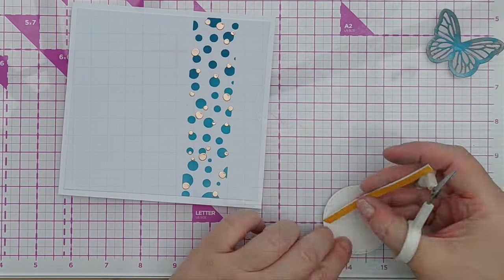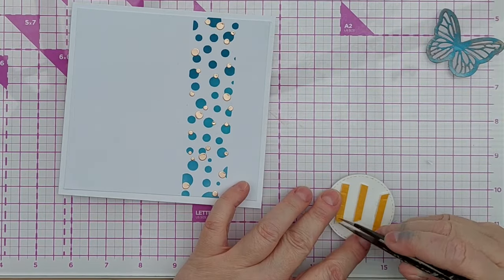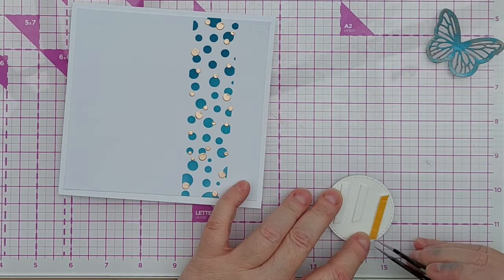I then added craft foam to the back of my circles and stuck them about two-thirds of the way up the card panel.